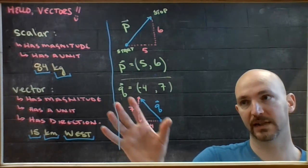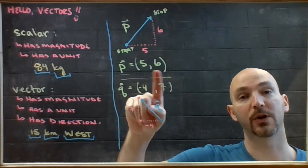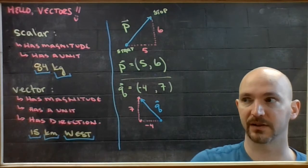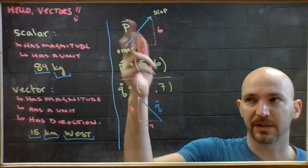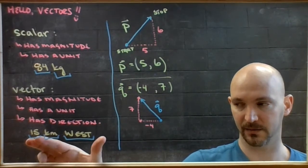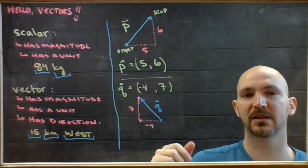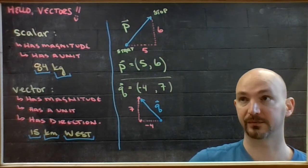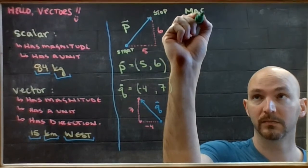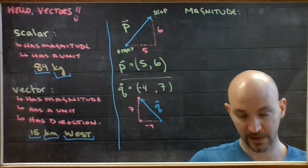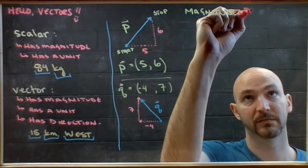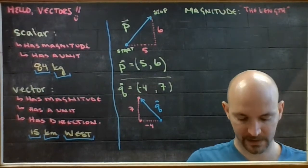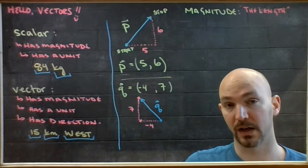Now that you can write a vector as an ordered pair, we need to look at the magnitude of that vector. Since P with an arrow on top represents the whole thing — the magnitude, unit, and direction — I need to change notation when asking about just the size. So I'm going to introduce the idea of magnitude, which can be interpreted as the length of the vector.